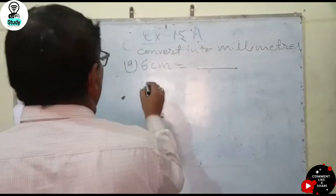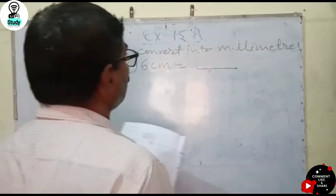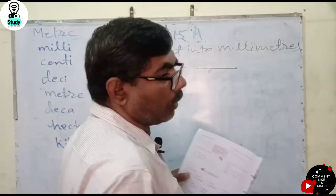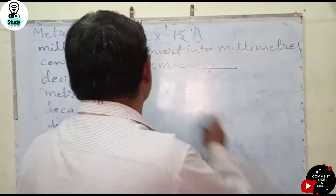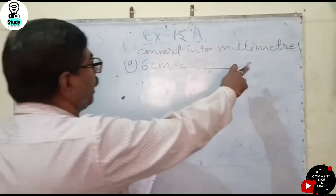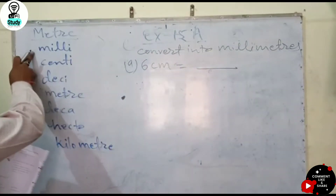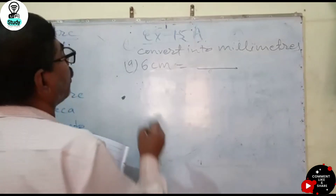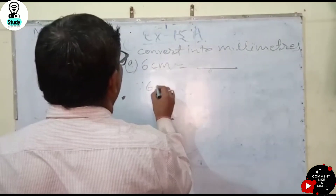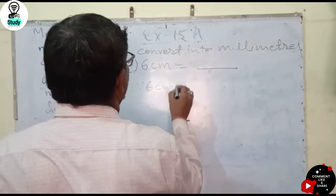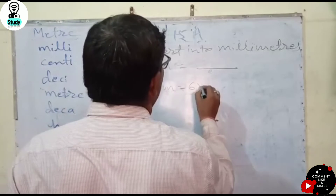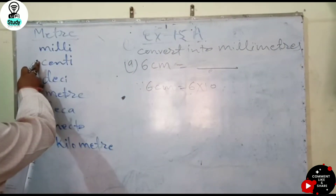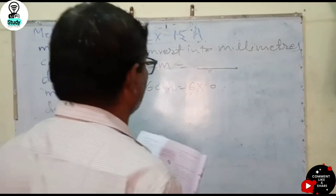You have to change 6 centimeters into millimeters, and millimeter is a smaller unit than centimeter. So you have to multiply. 6 centimeters equals 6 multiplied by 10, because centimeter is 10 times greater than millimeter.